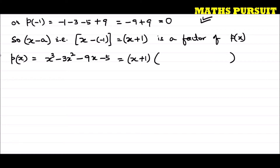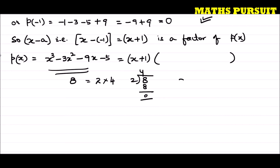We have p(x) equals x to the power 3 minus 3x to the power 2 minus 9x minus 5, and x plus 1 is a factor. To find the other factor, I will divide this polynomial by x plus 1 — similar to how knowing one factor of a number lets you divide to find the other.